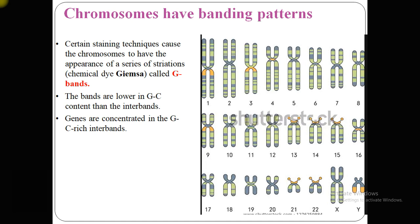Certain staining techniques cause chromosomes to have the appearance of a series of stripes. The chemical dye used in G-banding is known as Giemsa — that is why it is named G-banding. The bands are lower in GC content than the inter-band regions, and genes are concentrated in the GC-rich inter-band regions.